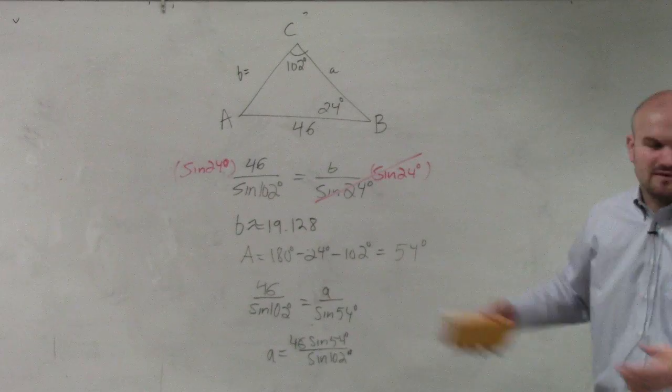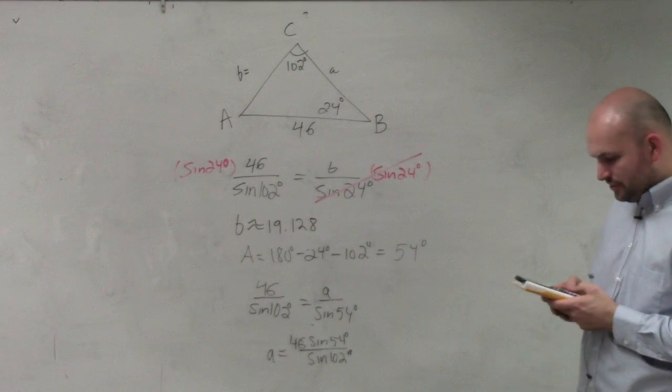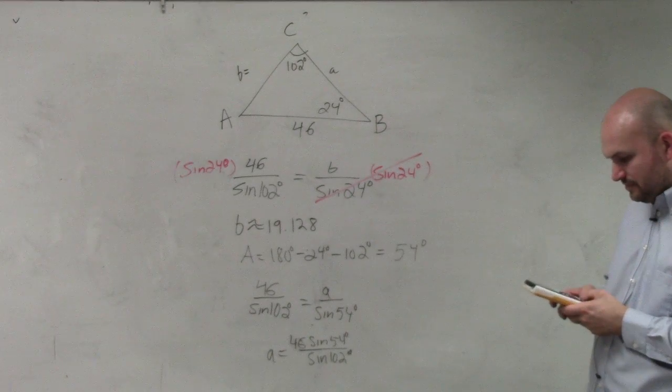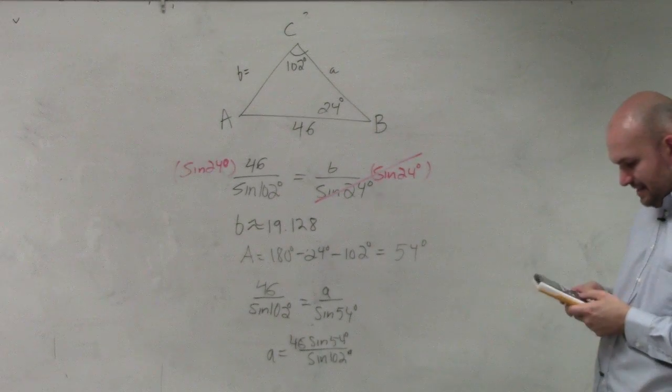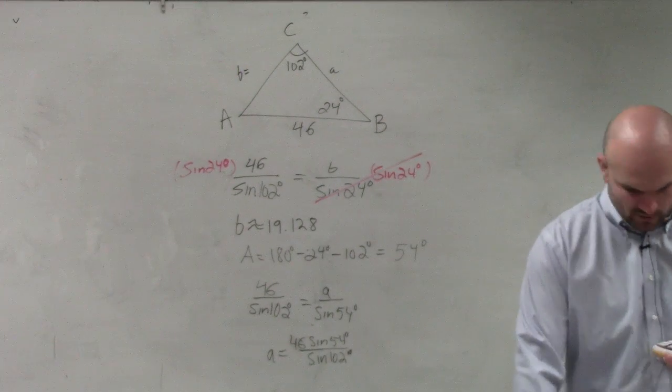So why don't we type that into our calculator? Because again, I'm just doing the same solving technique, but I'm just kind of skipping steps. So I'll do 46 times the sine of 54, end my parentheses, divided by the sine of 102, and I get 38.246.